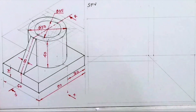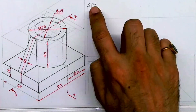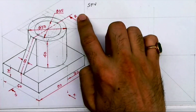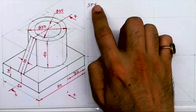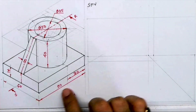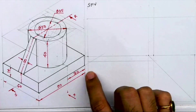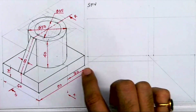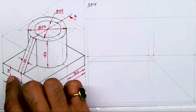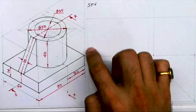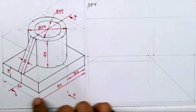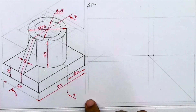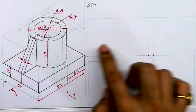First we'll find out the dimensions: length is 90, cutting plane is along SR. Height is 14 plus 40, which equals 54, and width is 60. So first we will draw the layout.